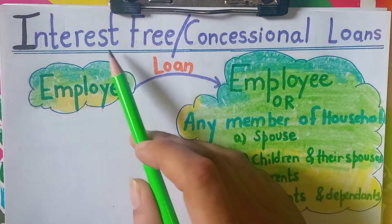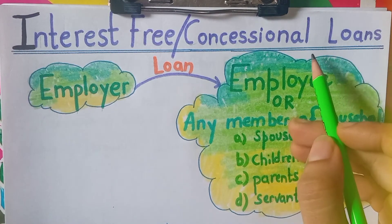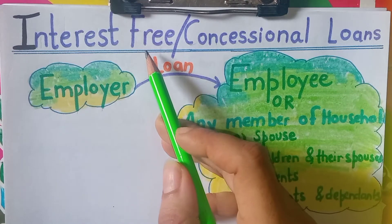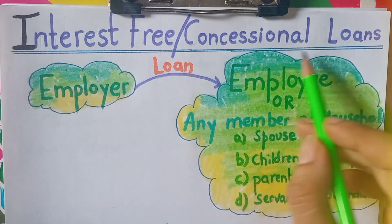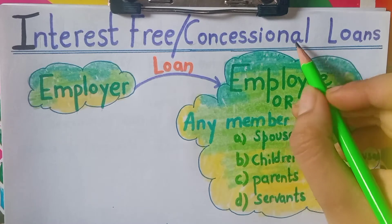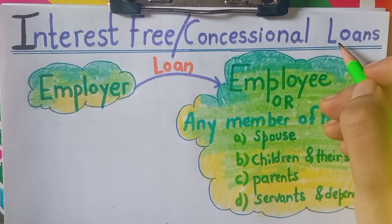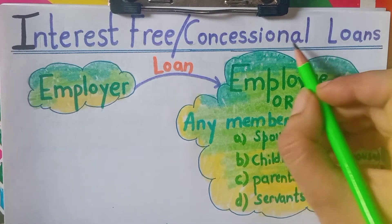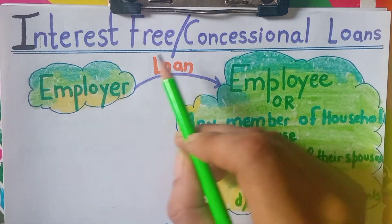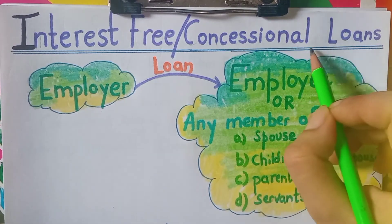What is this perquisite? Its name is interest free loan. When do we call it a concessional loan? If our employer has given a loan at a concessional rate — meaning if the bank has a similar rate of interest in the market and the employer charges less — it will be called a concessional loan. In both cases it will be a perquisite, whether it is free of cost or charged at a concessional rate.